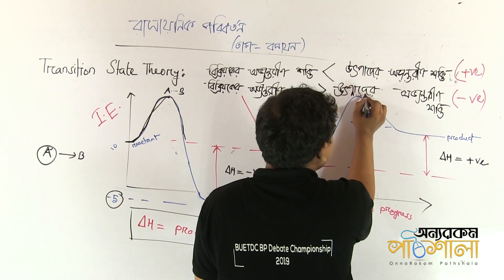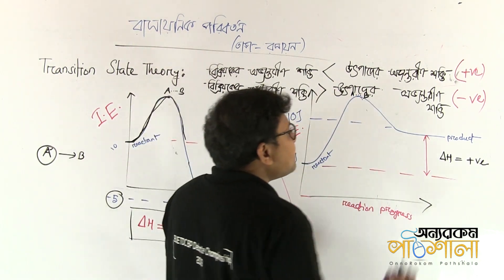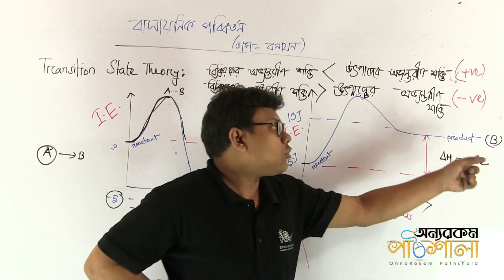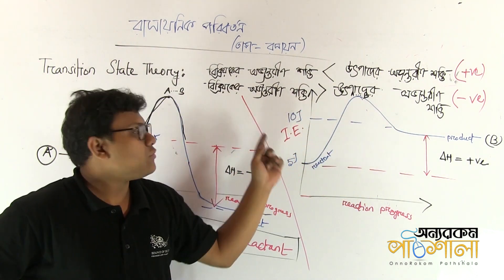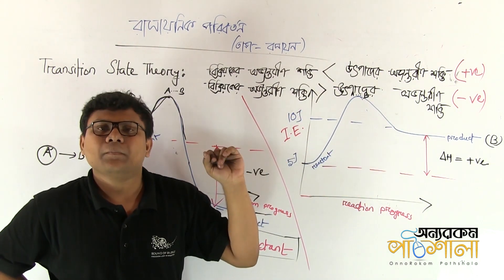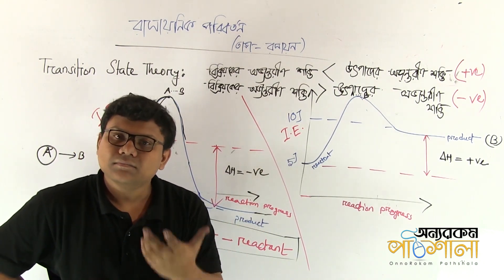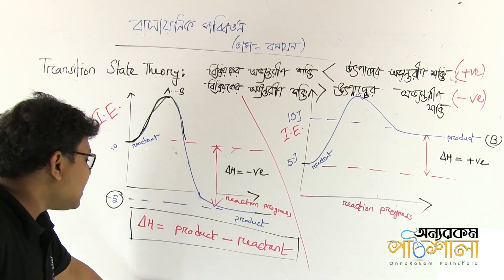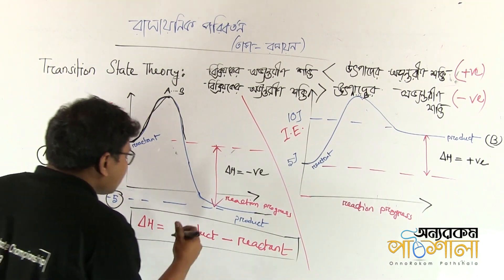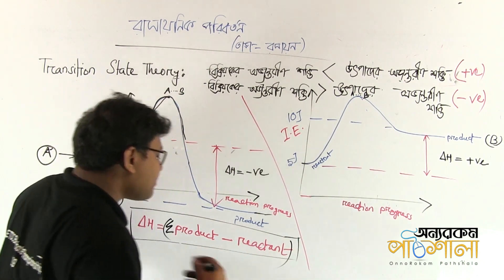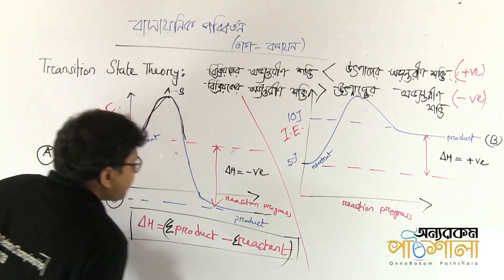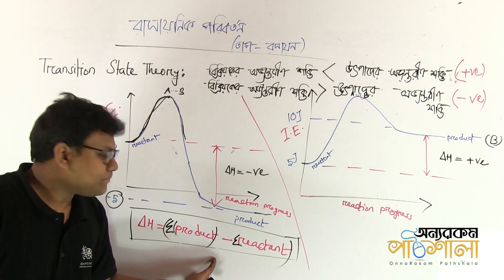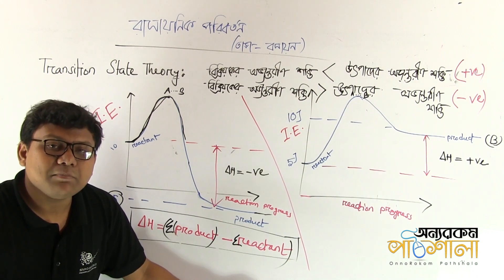This is the product — A and B. This is the reactant value. We need to look at the value of the enthalpy. The summation of the product enthalpy — always, the summation of the product enthalpy minus the summation of the reactant enthalpy.